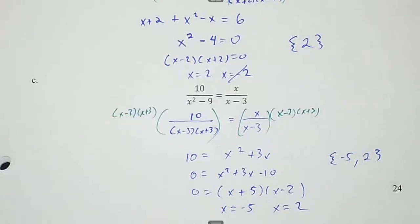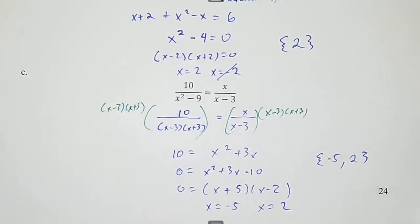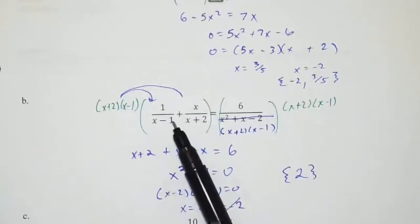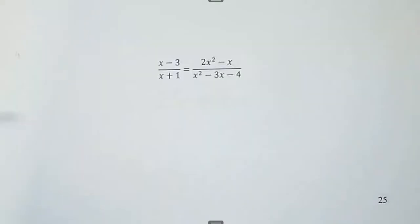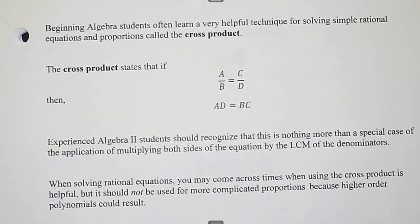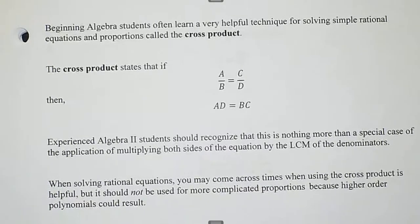Letter C is what we call a proportion — when two rational numbers are equivalent. This is not a proportion because it has two fractions added to another fraction. Many students learn a technique called the cross product, which you can use in this class as well, but you don't want to over-apply it. For example, the last problem we did — the cross product would actually make it harder.